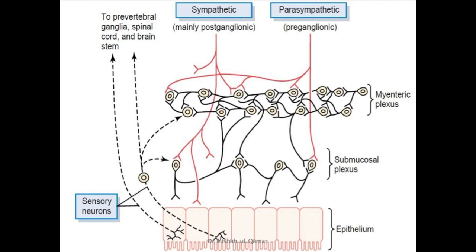The excitatory neurotransmitters of the myenteric plexus are acetylcholine and substance P, whereas the inhibitory neurotransmitters are nitric oxide and VIP — vasoactive intestinal peptide. These inhibitory signals are useful for inhibiting some intestinal sphincter muscles for the movement of food along successive segments, such as the pyloric sphincter controlling stomach emptying and the sphincter of the ileocecal valve controlling emptying from small intestine into the cecum. Overall effects of myenteric plexus stimulation include increased tone of the gut wall, increased intensity and rate of rhythmical contraction, and increased velocity of conduction of excitatory waves along the gut wall.